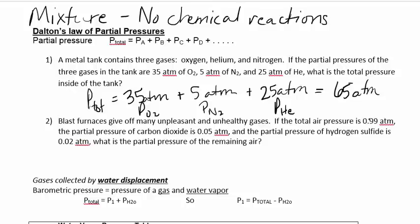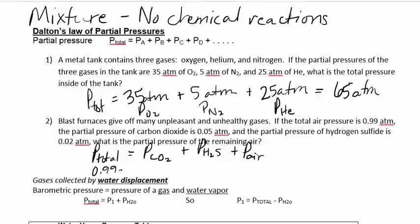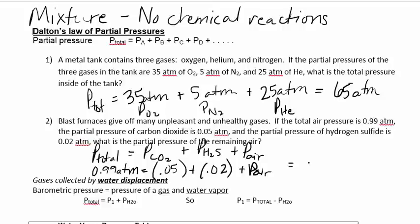What if they give you the total pressure? Now I know my total pressure. There's some carbon dioxide, some hydrogen sulfide, and the rest is just air. The total pressure is 0.99; 0.05 came from the carbon dioxide, 0.02 came from the H₂S. So the rest is just the pressure of air — you add and then subtract, giving 0.92 atmospheres.